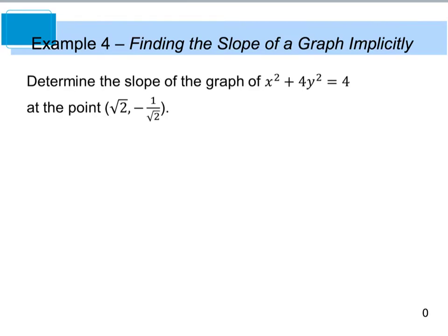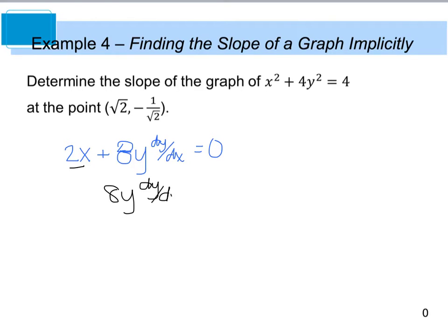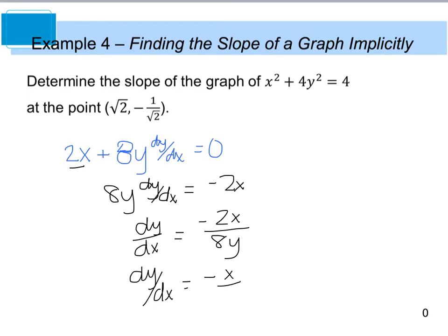For our next example, we want to determine the slope of the graph of x squared plus 4y squared equals 4 at the point (√2, −1/√2). I'm going to take the derivative of the equation. When I take the derivative, I end up with 2x plus 4 times 2, which gives me 8y. The 4y squared term does not include x's, so I am going to include dy/dx, and I'm going to set that equal to 0. So now I need to get my dy/dx term by itself. I move the 2x over to the right-hand side, so I have 8y dy/dx equals negative 2x, and dy/dx equals negative x divided by 4y.